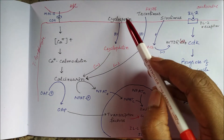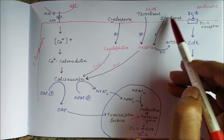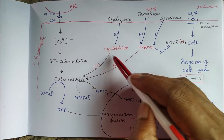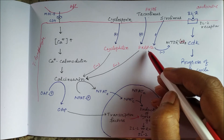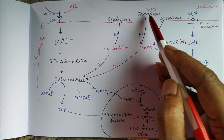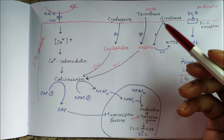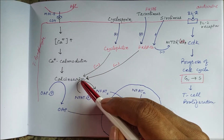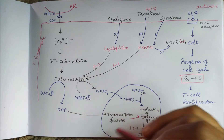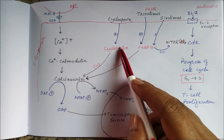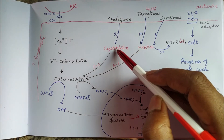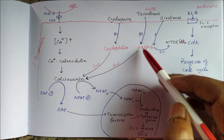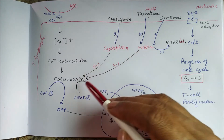Drugs like cyclosporine, tacrolimus, and sirolimus inhibit this pathway. There are two cytosolic proteins: cyclophilin and FKBP12. FKBP stands for FK-binding protein, because tacrolimus was initially known as FK506. Cyclophilin and FKBP inhibit calcineurin, thereby inhibiting calcineurin-mediated interleukin-2 generation. Cyclosporine binds to cyclophilin and then inhibits calcineurin; tacrolimus binds to FKBP12 and then inhibits calcineurin.